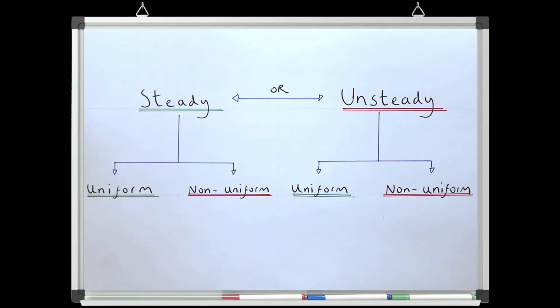So a flow can be: steady uniform, steady non-uniform, unsteady uniform, or unsteady non-uniform.